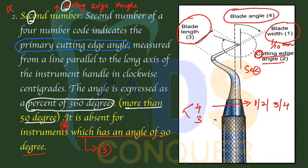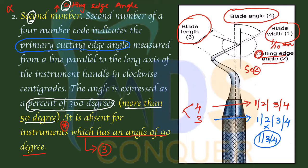In the three-number formula, the first number represents blade width, the second number is absent, the third number represents blade length, and the fourth represents blade angle — so the digits present are 1, 3, and 4. If asked what the second number represents in a 3-digit formula, the answer is blade length. For a 4-digit formula, the second number is the cutting edge angle.